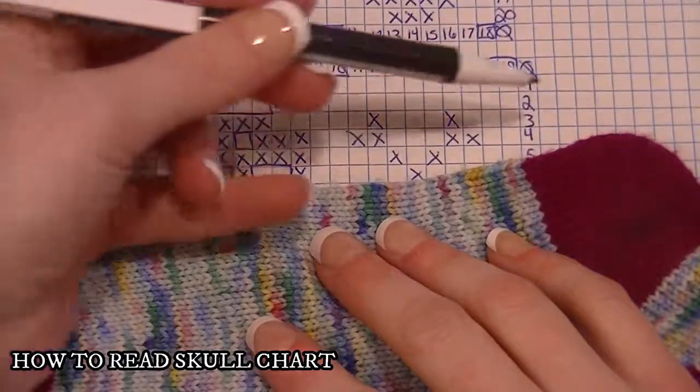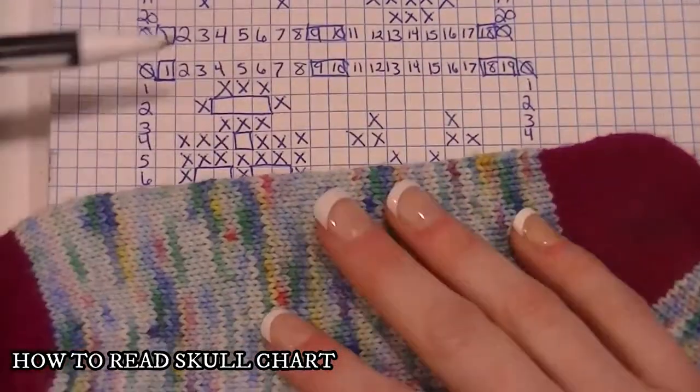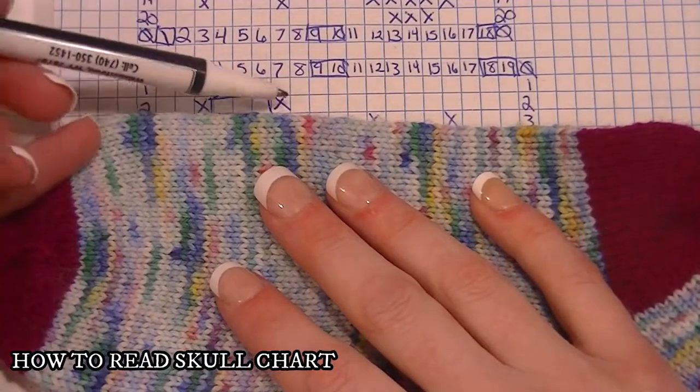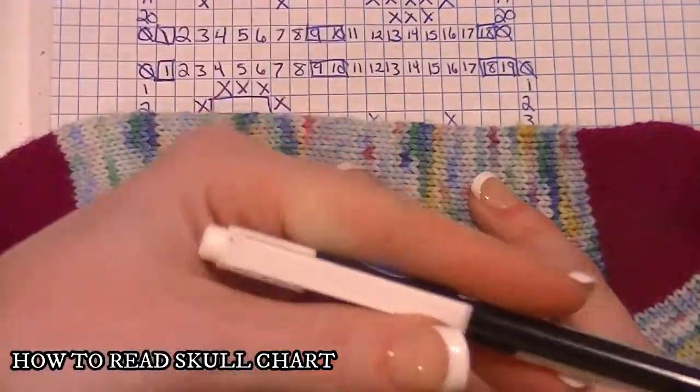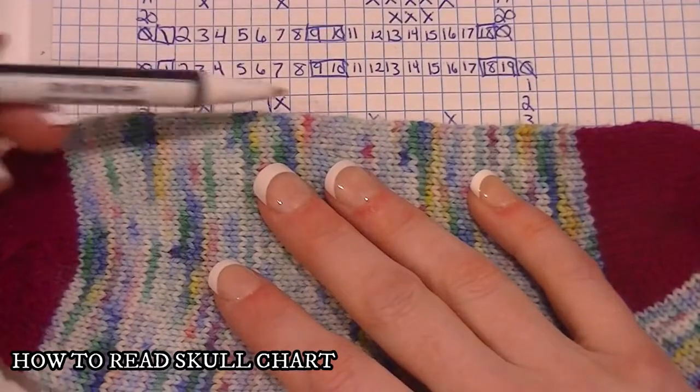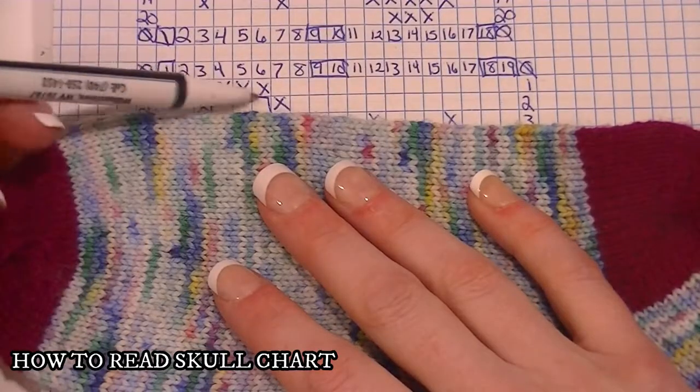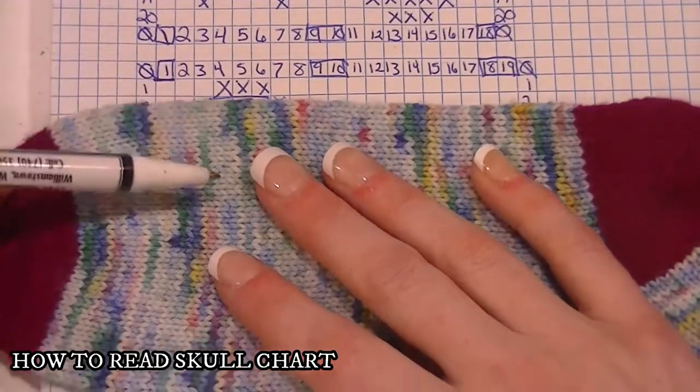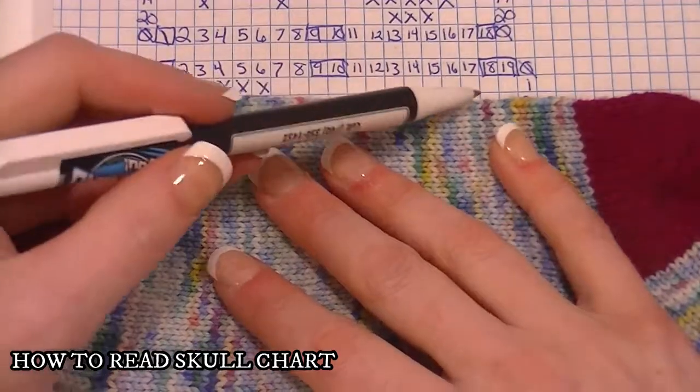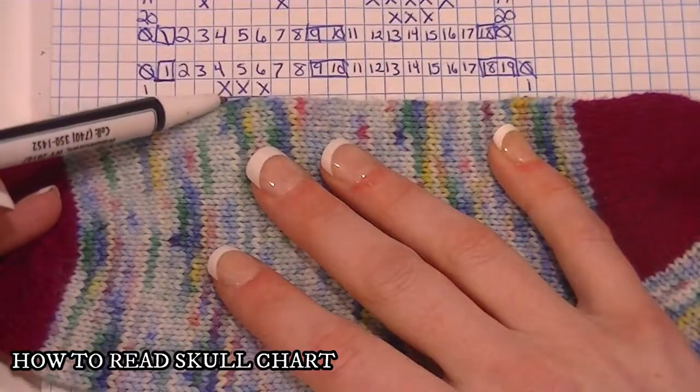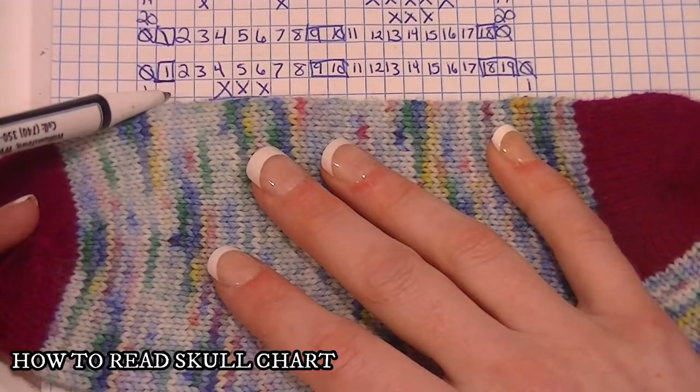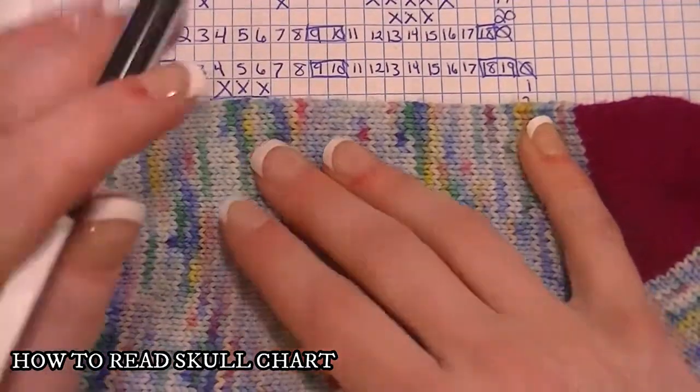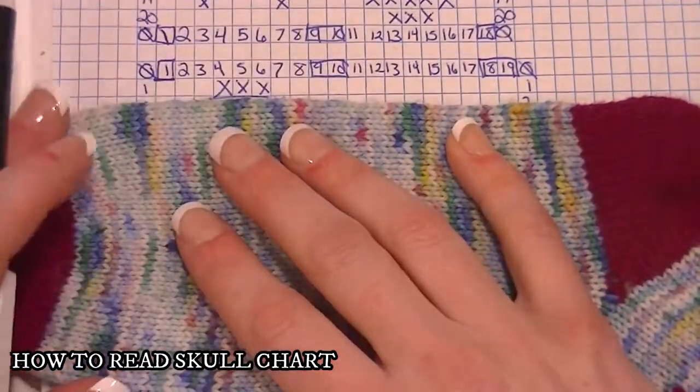Every row is from left to right since you're working in the round. You start with row one. The empty squares are your background color, which for this sock is pink. The X's are your foreground color - the skulls - which is gray. You work all the way around the loom, counting from peg 1 to 18, which you'll have marked out.